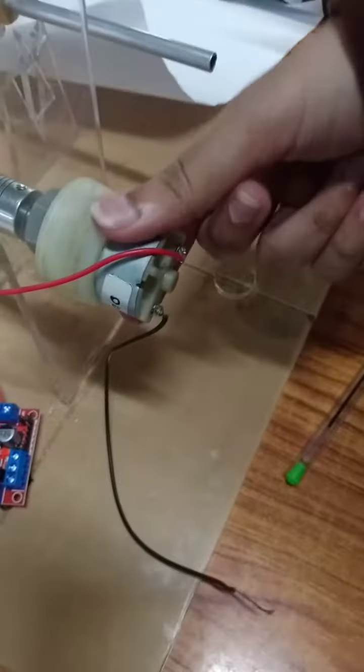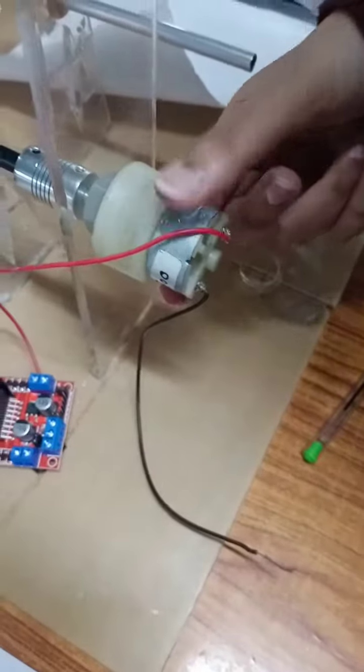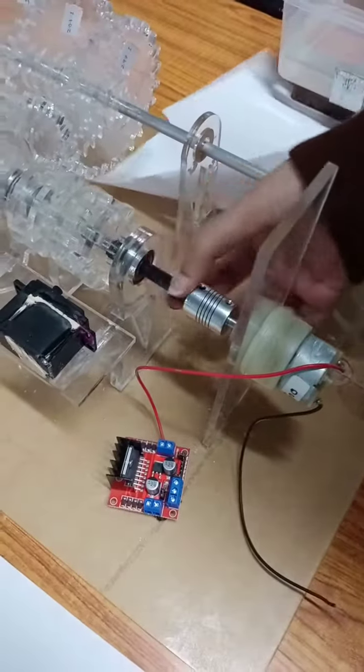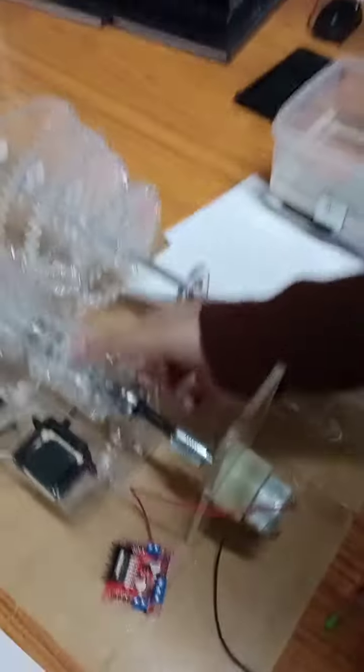This is the generator. In the place of generator, we use the electric motor. From the electric motor, these are the shafts. Through this, through the clutches, the energy will be passed.